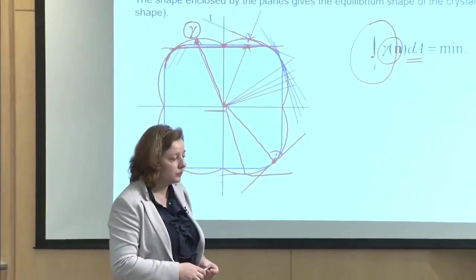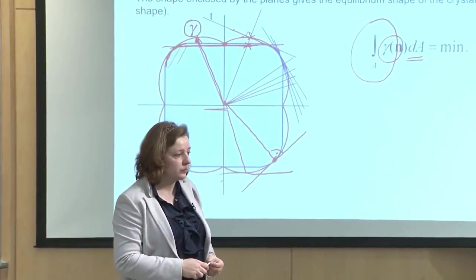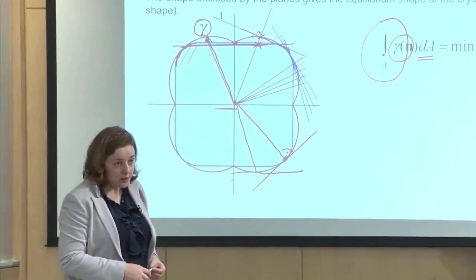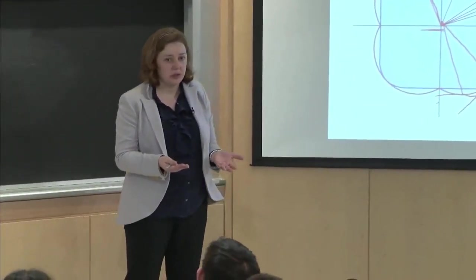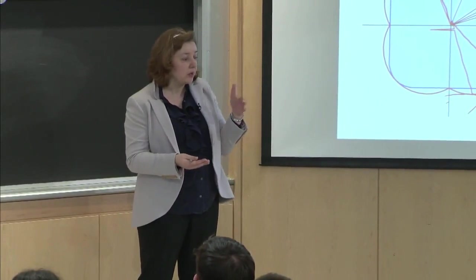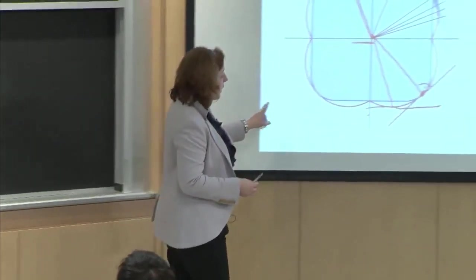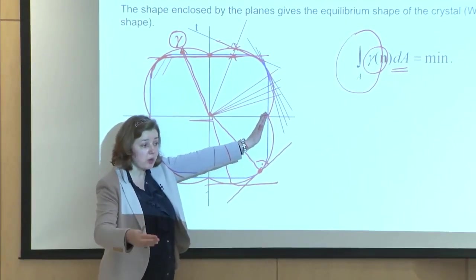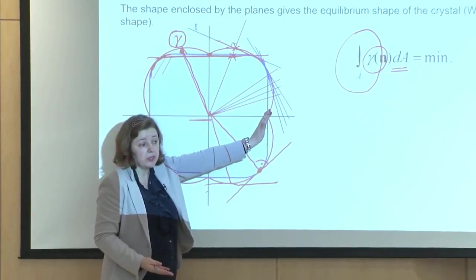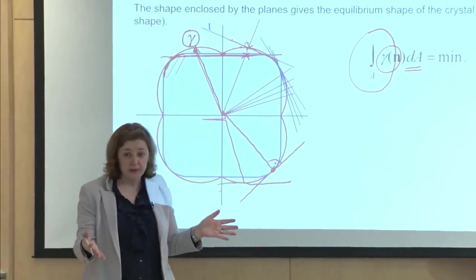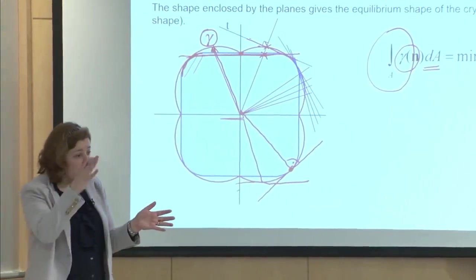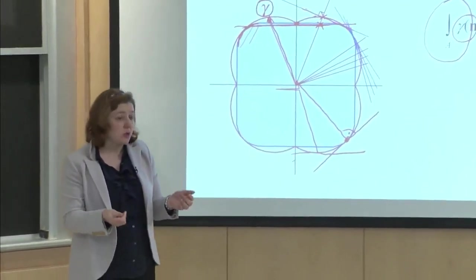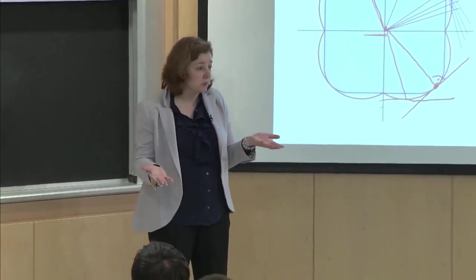Student: In the problem set, when we're asked to draw the Wulff shapes, we're also asked to get the associated Miller indices. Instructor: A Miller index is the indication of what is the crystallographic direction or plane that corresponds to a given facet. You have an equilibrium shape, and these facets are certain crystallographic planes within the crystal — whether it's 001, 110, 111. So you're being asked to identify what these facets are.